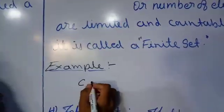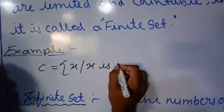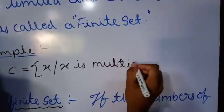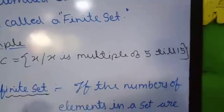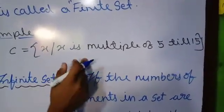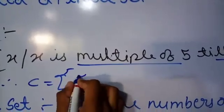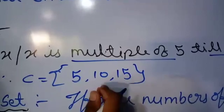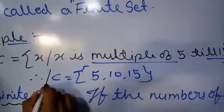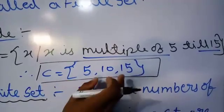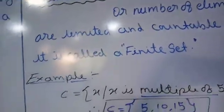Let's take an example. Set C is equal to {X such that X is a multiple of 5 till 15}. Do we have any limitations? Yes. We have to write the multiples of 5 just till 15. So set C is equal to {5, 10, 15}. We cannot write more than 15. We are able to count the elements of set C: 1, 2, 3 — just 3 elements. This is limited and countable, so we can say set C is a finite set.